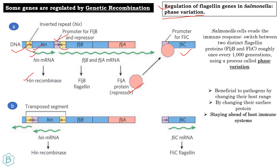Now, when HIN recombinase catalyzes the inversion of this segment via the two inverted repeats, it causes a 180-degree inversion of this segment, causing leftward transcription of HIN mRNA that can still encode HIN recombinase, but the promoter region for flagellin B and flagellin A is now repositioned and not getting transcribed. When the flagellin A repressor protein is absent, flagellin C mRNA is transcribed, leading to formation of flagellin C protein. This is beneficial to pathogens by changing their host range and surface proteins, allowing them to stay ahead of the host immune system.